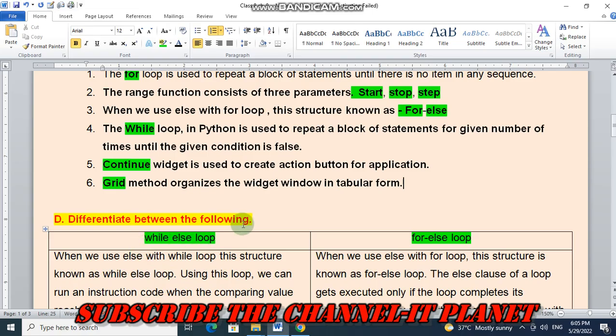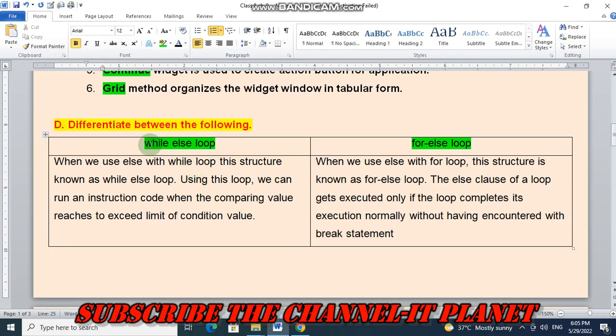Question number D, differentiate between the following. We have to write the difference between while else loop and for else loop. When we use else with while loop, this structure is known as while else loop. Using this loop, we can run an instruction code when the comparing value reaches to exceed limit of condition value.